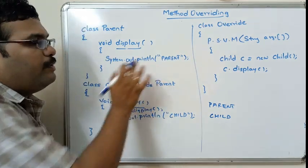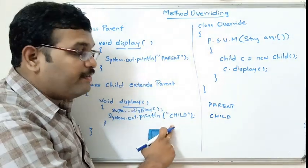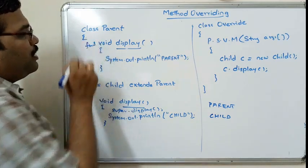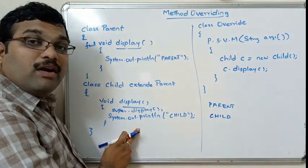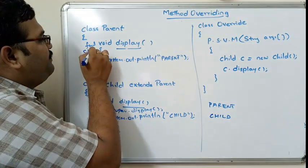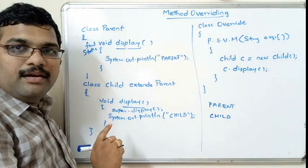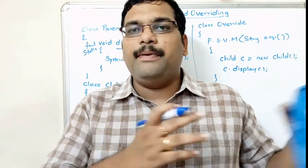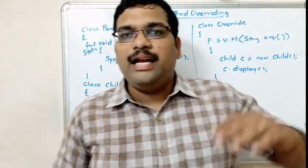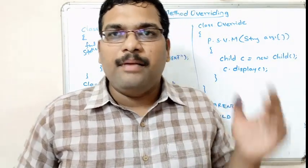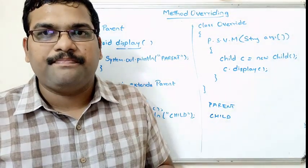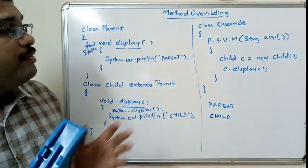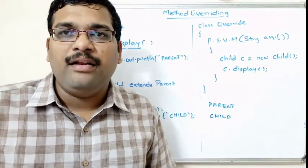Inside the Child's display method, you can write super.display — automatically the parent method will execute first, then the child statement, so the output will be 'Parent' and 'Child'. If the display method is declared as final, it cannot be overridden by the child. Similarly, if it is static, it cannot be overridden. The child overrides the method when it is not satisfied with the superclass implementation.